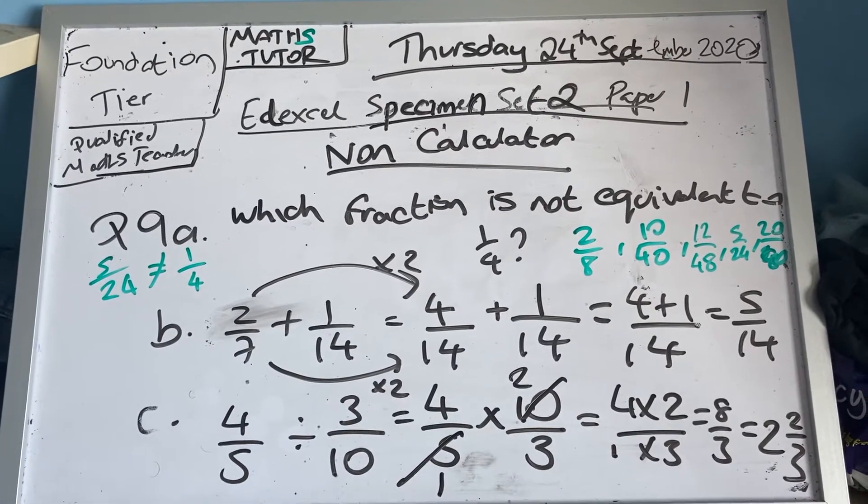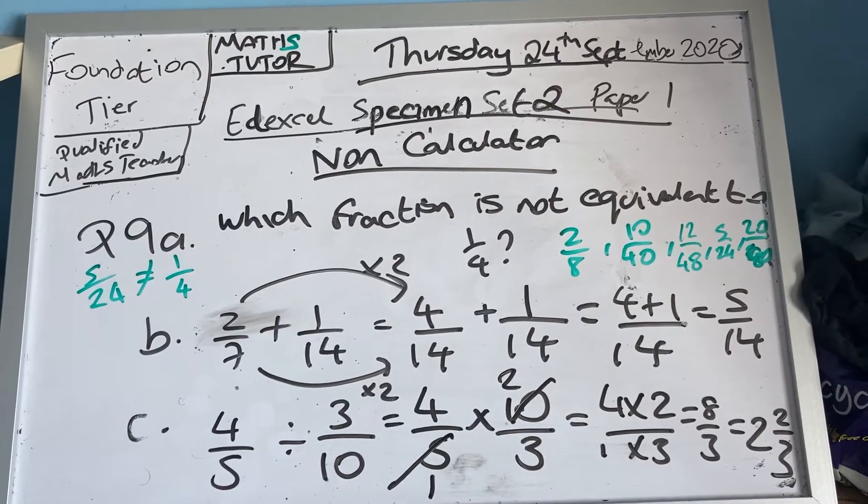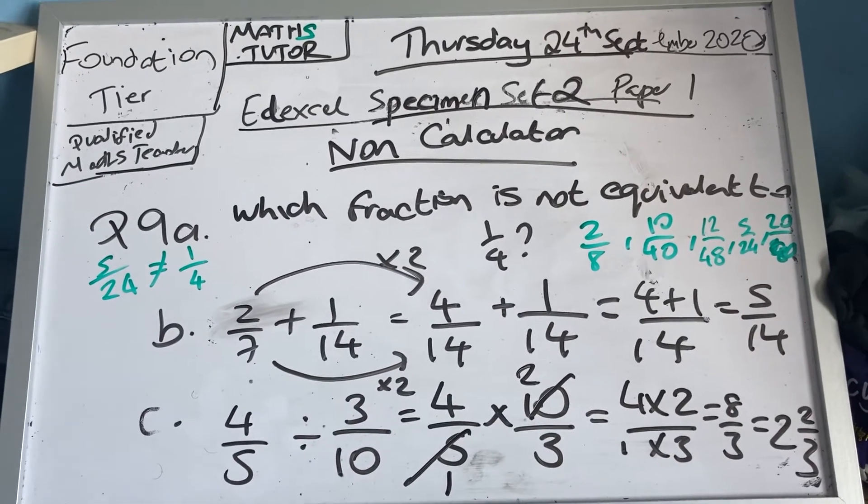Well, five over twenty-four is not equivalent, so the answer is five over twenty-four. That fraction is not equivalent.